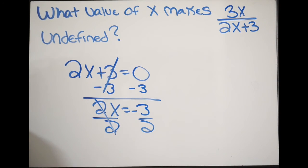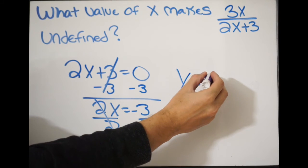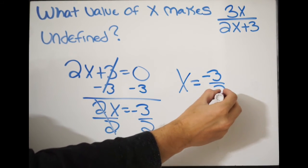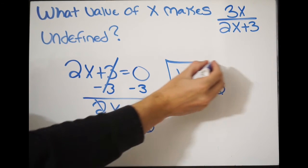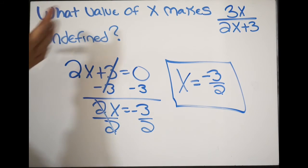I can see here that x is going to be equal to negative 3 over 2. So this is the value of x that's going to make the expression undefined.